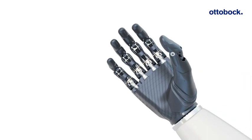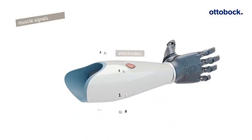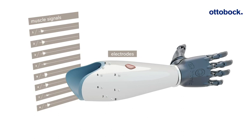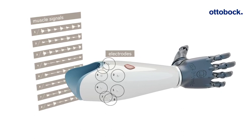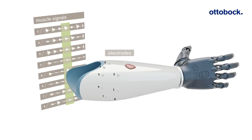MyoPlus pattern recognition controls terminal devices with artificial intelligence. The MyoPlus prosthesis control uses up to eight electrodes to measure incoming signals of the forearm and derives patterns that are characteristic for individual movements.